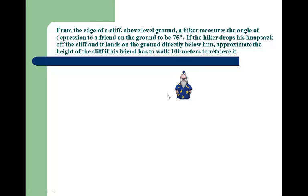This is the only clip art I could find at the last minute. From the edge of a cliff above level ground, all of our ground is level, a hiker measures the angle of depression to a friend on the ground to be 75 degrees. Angle of depression, if you were to stick your arm straight out to your side and then you were to lower it until you see a point on the ground that you're interested in, that angle that your arm goes through, that's your angle of depression. Nine times out of ten, it'll be outside the triangle. Hold your arm straight out to the side, make a 90 degree angle between your arm and your body, and go down until you see your point of interest. The angle that your arm goes through, that's your angle of depression. Now the hiker drops his knapsack off the cliff and it lands on the ground directly below him. Approximate the height of the cliff if his friend has to walk 100 meters to retrieve it. This is you or me. That 75 degrees, stick your arm straight out, that 75 degrees is out here. The friend is down here on the ground over to the right.